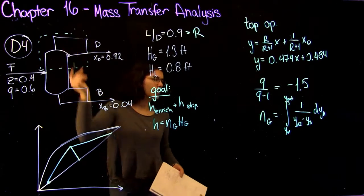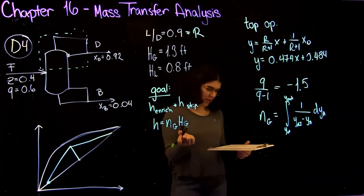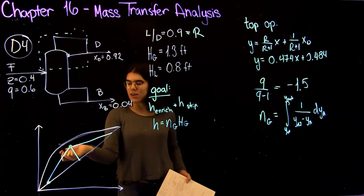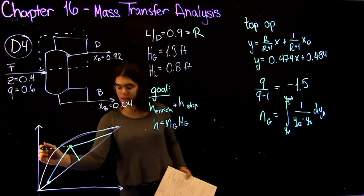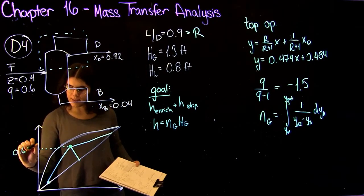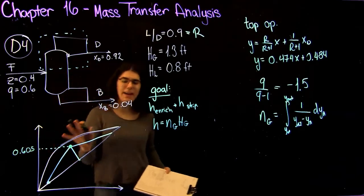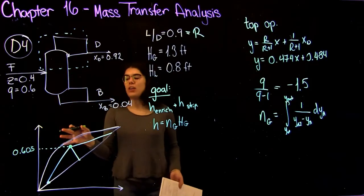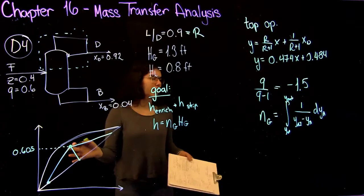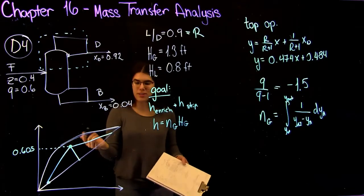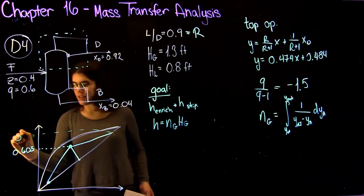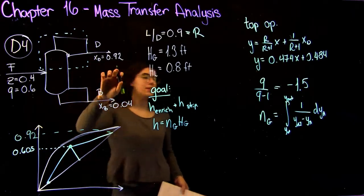For the enriching section, we know that it's going to come in at the point of intersection here. Whatever your Y value is here, that's going to be your Y in. You should get a Y in of about 0.605. Again, because this is a graphical method, you can get slightly different numbers, but as long as your final number is within reason of the answer, you will get full marks. We also know that our Y out is going to be equal to 0.92 because that was given.